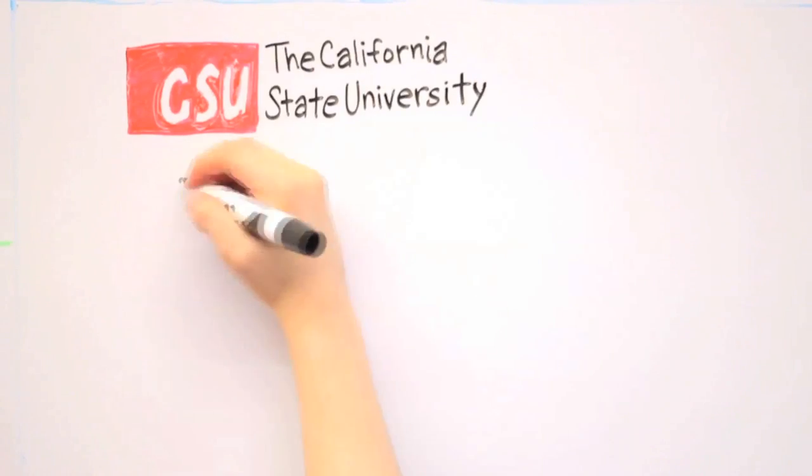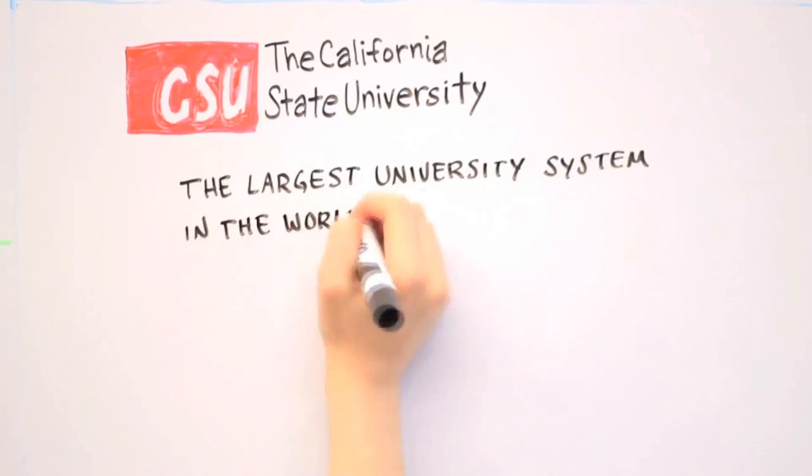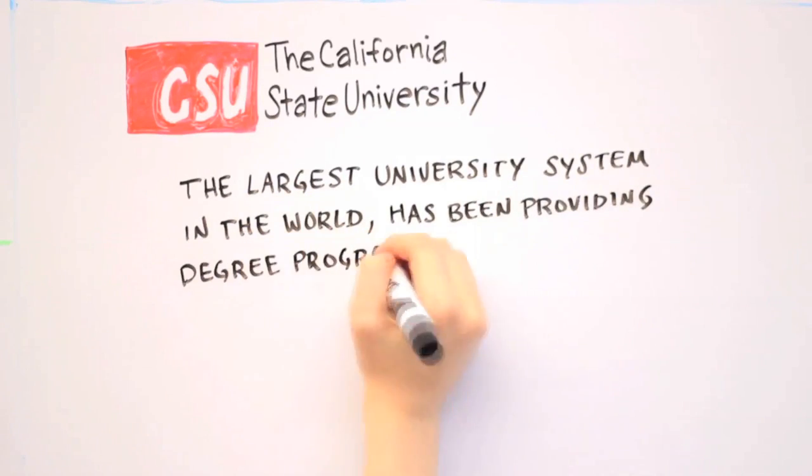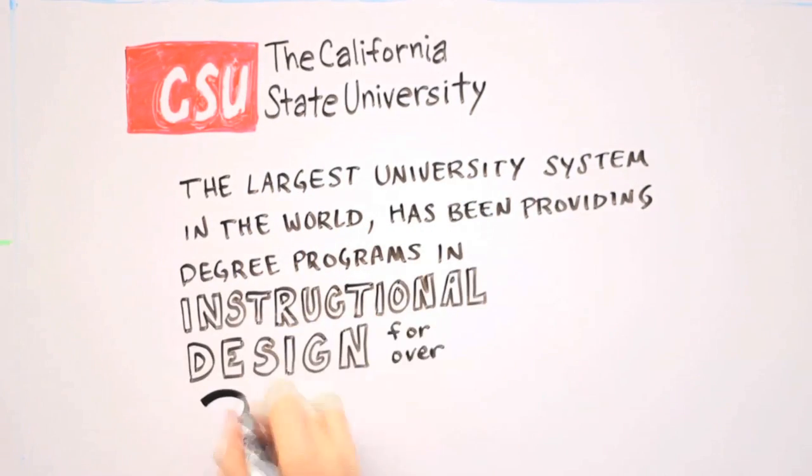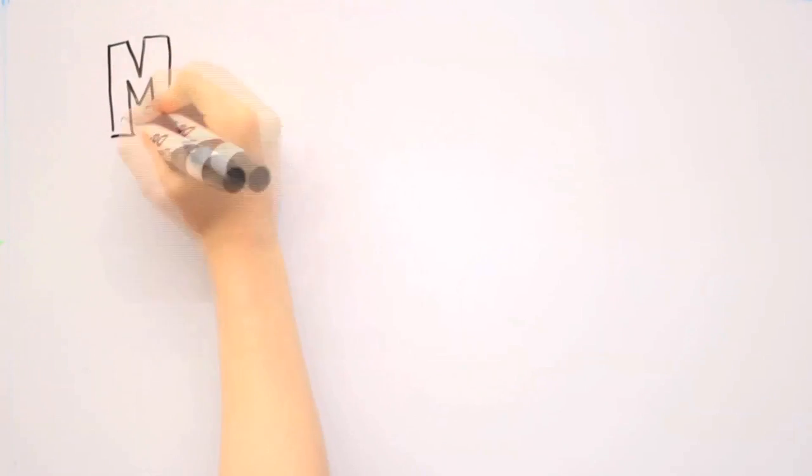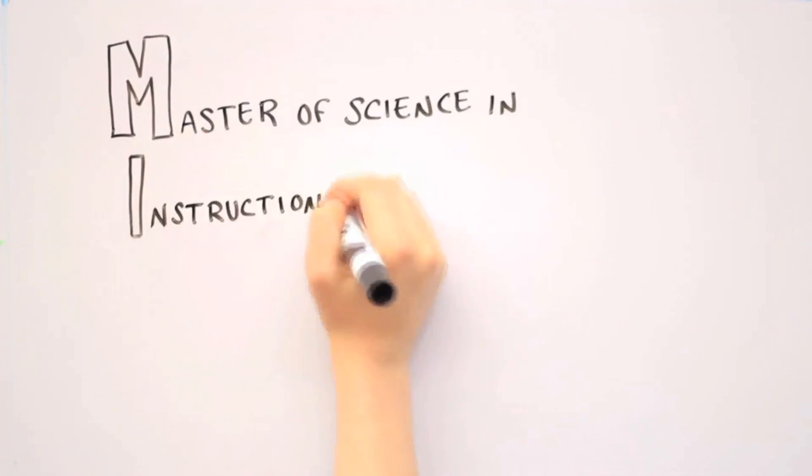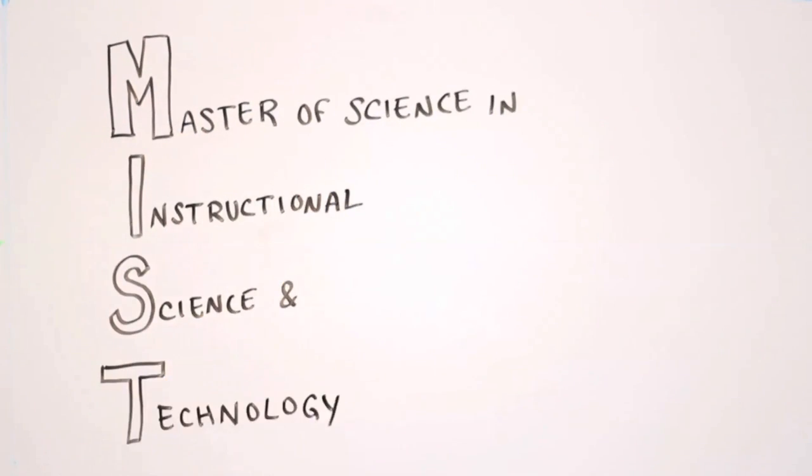Cal State University, the largest university system in the world, has been providing degree programs in instructional design for over 20 years. Through Cal State Online, it offers the Master of Science in Instructional Science and Technology degree, or MIST.